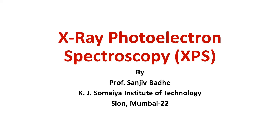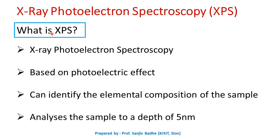Let us understand XPS, i.e. X-ray photoelectron spectroscopy. XPS stands for X-ray photoelectron spectroscopy. It is one of the standard tools used for surface material characterization. This technique works on the principle of the photoelectric effect. XPS can identify the elements that exist within the material — that is, it can be used to find out the elemental composition of the sample. It is a surface sensitive technique which typically analyzes the sample to a depth of around 5 nanometers.